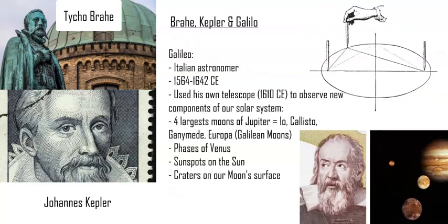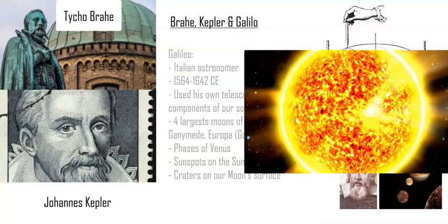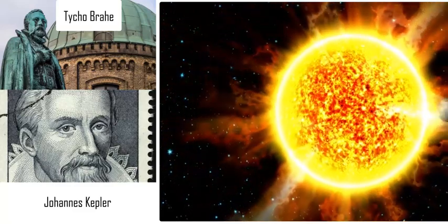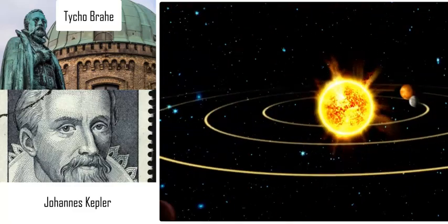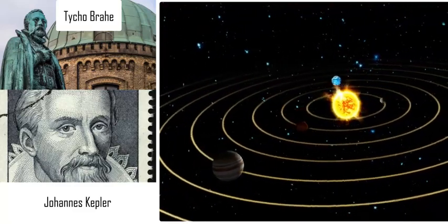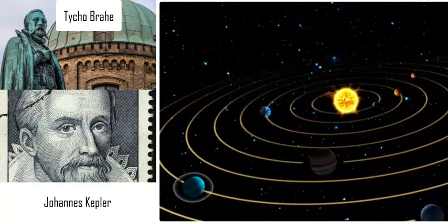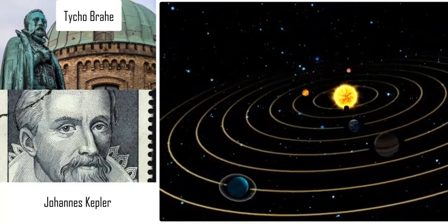Galileo in 1610 used his telescope to see the four moons of Jupiter — Ganymede, Io, and Europa — as well as Venus' phases, sunspots, and the phases of the Moon. So these three people — Brahe, Kepler, and Galileo — pushed astronomy to great heights once Copernicus put the Sun in the center, and the Catholic Church kind of lost their grip on the geocentric model.